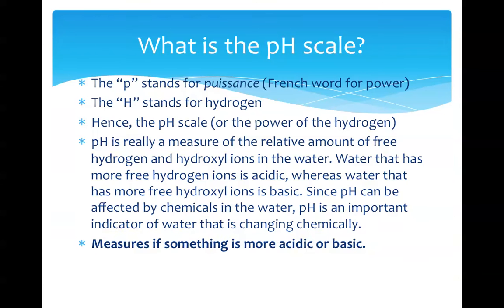The pH scale. The pH scale is really a measure of the relative amount of free hydrogen and hydroxyl ions in the water. The P stands for puissance, a French word for power. The H stands for hydrogen, hence the pH scale, or the power of the hydrogen.